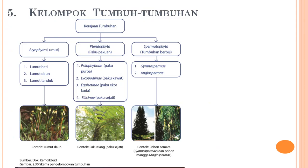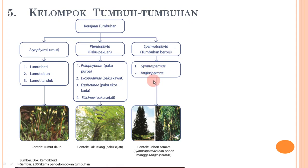Selanjutnya kelompok tumbuh-tumbuhan. Kelompok tumbuhan terdiri dari: lumut (Bryophyta) yang dibagi lagi menjadi lumut hati, lumut daun, dan lumut tanduk; paku-pakuan (Pteridophyta) yang meliputi paku kurba, paku kawat, paku ekor kuda, dan paku sejati; serta tumbuhan berbiji (Spermatophyta) yang meliputi Gymnospermae dan Angiospermae.